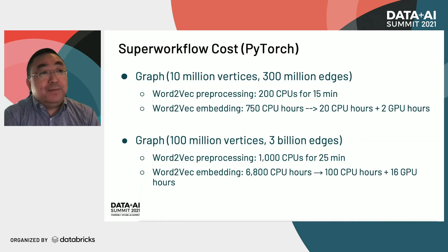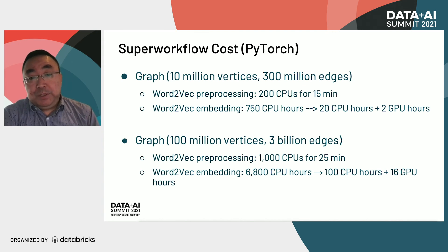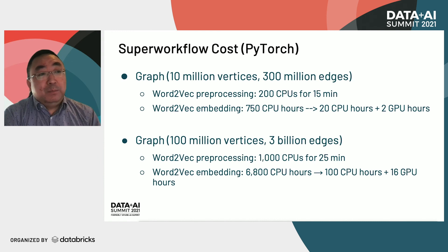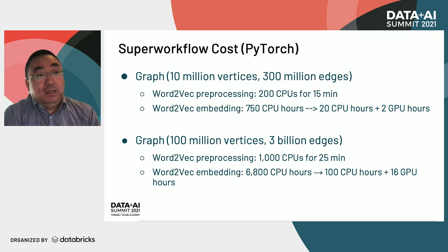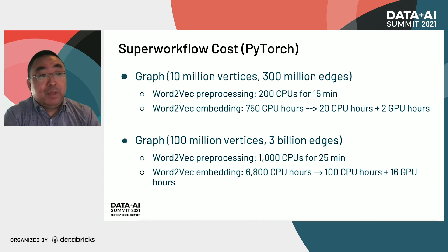With the same two graphs, the cost saving of using the super workflow is even more significant. For the graph with 10 million vertices, the word2vec embedding step cost is reduced from 750 CPU hours to 20 CPU hours plus 2 GPU hours — more than 90% cost reduction, even including the cost of the word2vec preprocessing step. Similarly, on the graph with 100 million vertices, the cost saving is from 6,800 CPU hours to 100 CPU hours and 16 GPU hours — also more than 90% cost reduction. This runtime and cost saving will be substantially amplified if you consider the huge cost of hyperparameter tuning.